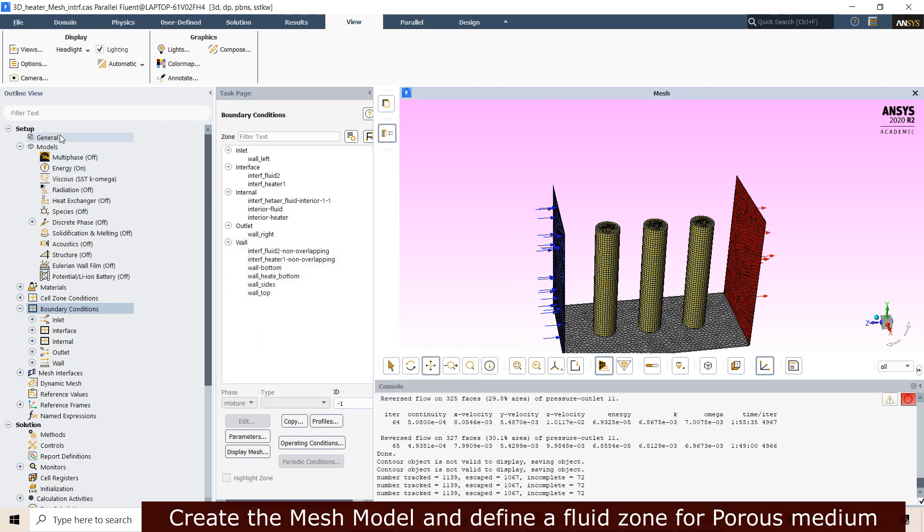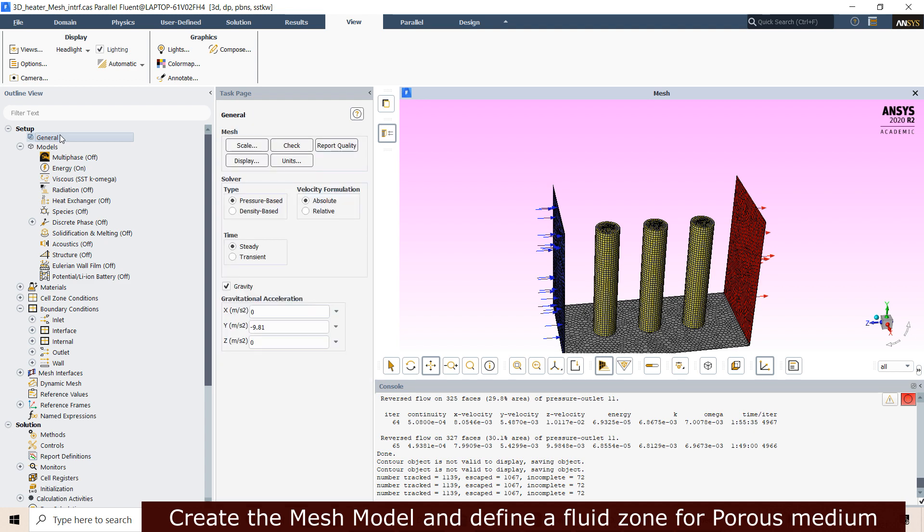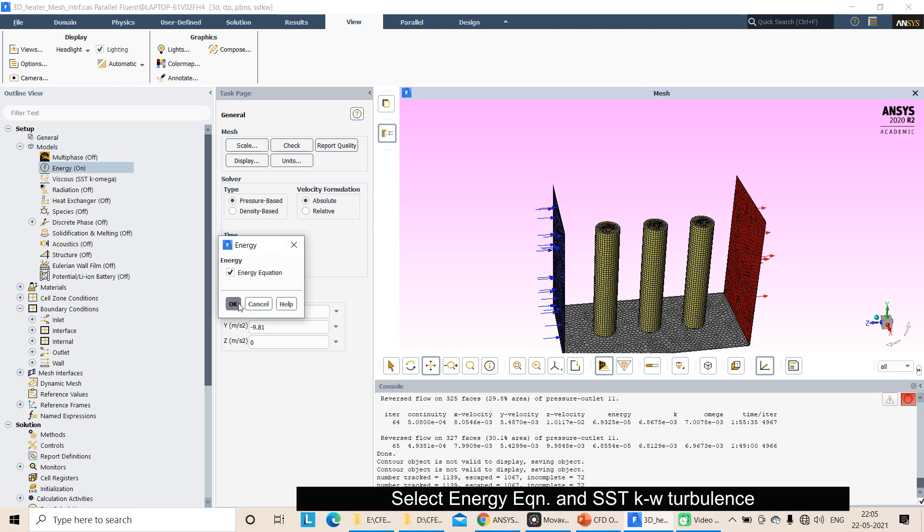Let's start with basic solver settings. In general, gravitational force is important, so I will give -9.81 in the y direction. I am selecting pressure-based solver. Next is the energy equation.